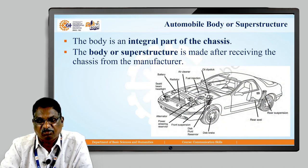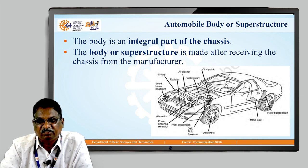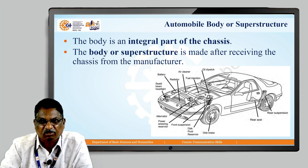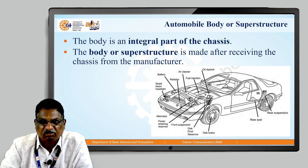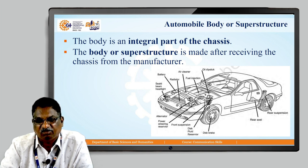The automotive body, or superstructure, is built on the chassis. This is called the automotive body or superstructure. The body is an integral part of the chassis. The body or superstructure is made after receiving the chassis from the manufacturer, and then the body is built on the chassis.